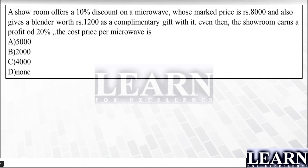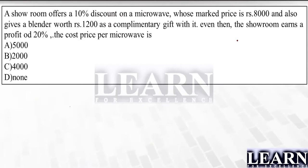A showroom offers a 10% discount on a microwave whose marked price is ₹8000, and also gives a blender worth ₹1200 as a complimentary gift. Even then the showroom earns a profit of 20%. We need to find the cost price of the microwave. They are going to give a 10% discount as well as a ₹1200 complimentary gift, and even after that the showroom earns a 20% profit.